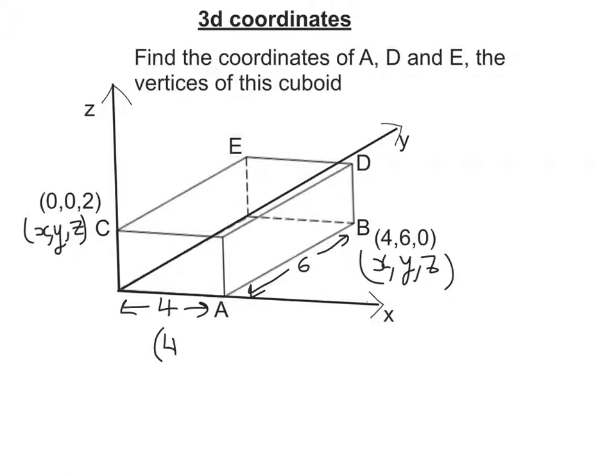So to work out A, well A is going to be 4 along the X axis, as it starts here and goes here. But it's on the X axis, so it's no Y and no Z.